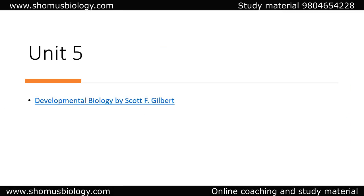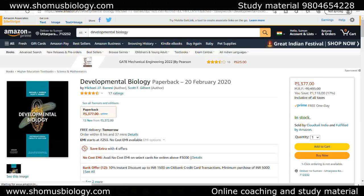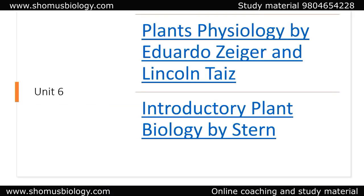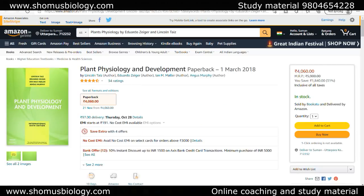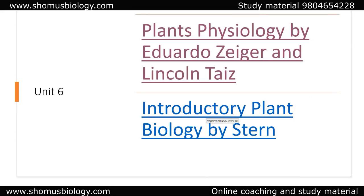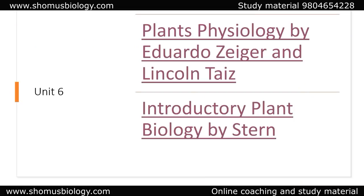For Unit 5, developmental biology, there is only one book we always talk about: Developmental Biology by Scott F. Gilbert. Nothing else is needed. For Unit 6, plant physiology, the best book is Plant Physiology by Taiz and Zeiger — that is the greatest plant physiology book ever. Apart from that, Plant Biology by Stern is also good, but Taiz and Zeiger is the top choice and will suffice your preparation.